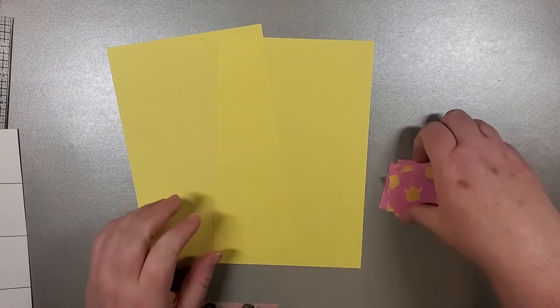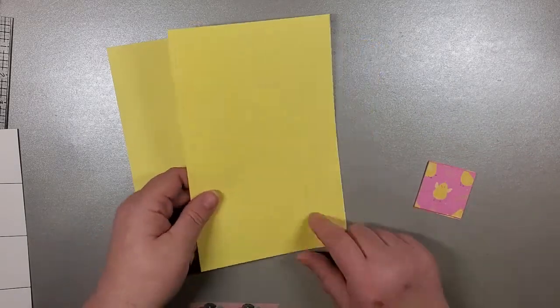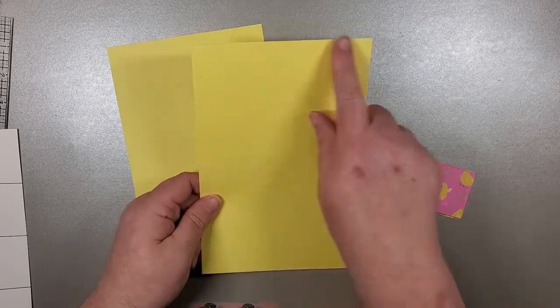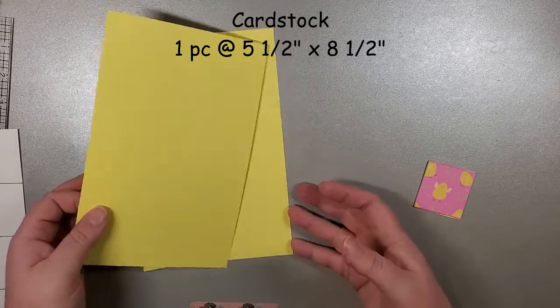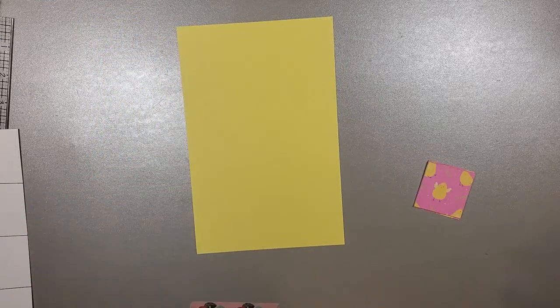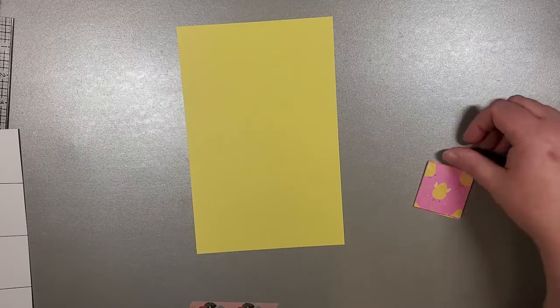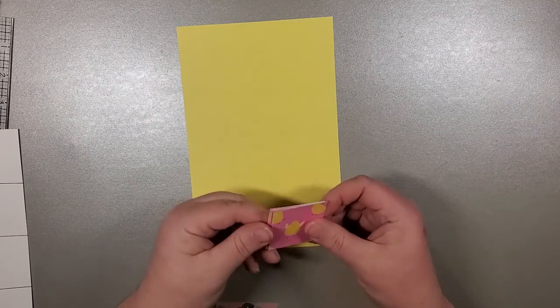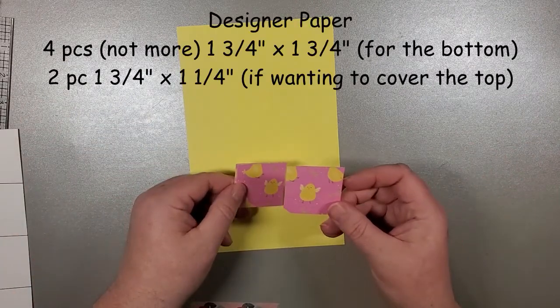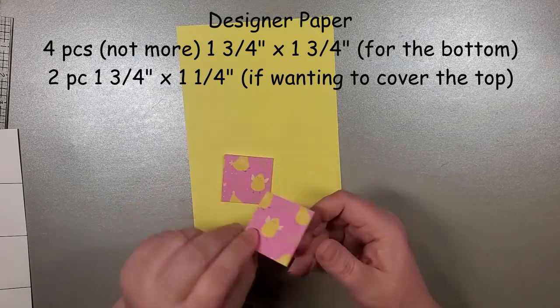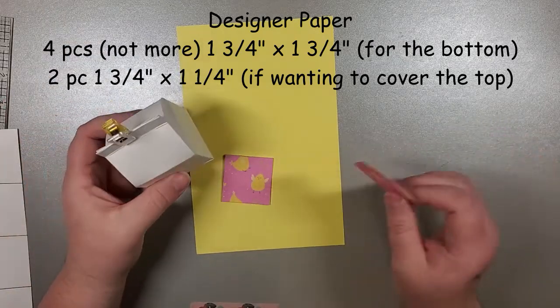So I will start off by giving you some of the quick measurements. We've already done the yellow paper, five and a half by eight and a half. You don't need two, I just happen to have two handy because I just cut it. And then you need either four to six of one and three quarter by one and three quarter inch decorative paper. So I said four to six, and it really depends on which boxes you're going to be decorating.